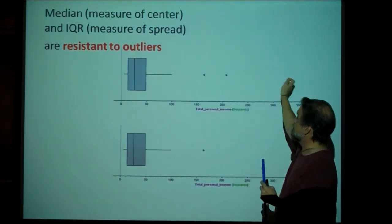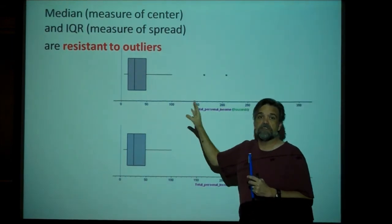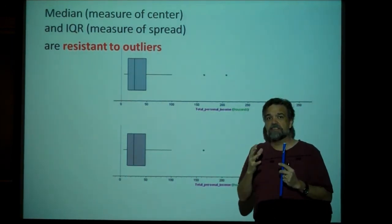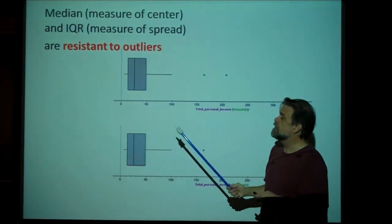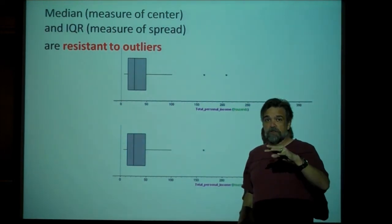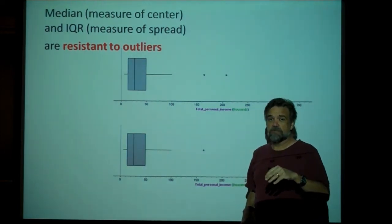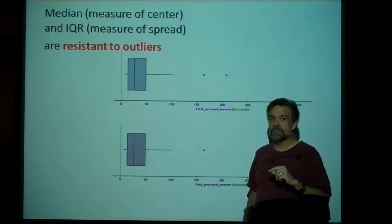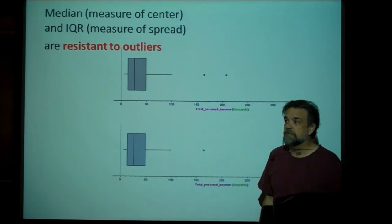The median and the IQR are resistant to outliers. Meaning, if I take an outlier and I move it around, it does nothing to those values. So, they're nice, stable values. In the next video, we're going to look at mean and standard deviation as ways of measuring our center and spread. Those are not resistant to outliers, which is why this is important.